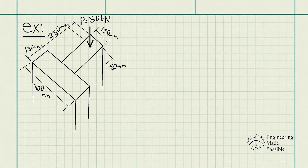For this problem statement, the column is built up by gluing two identical boards together. Determine the maximum normal stress developed on the cross-section when the eccentric force P equals 50 kN is applied.